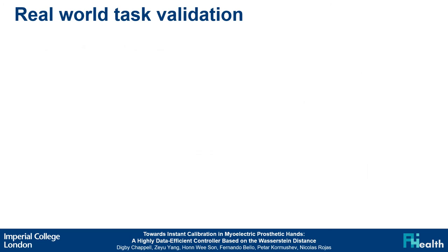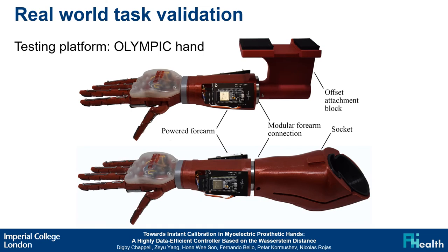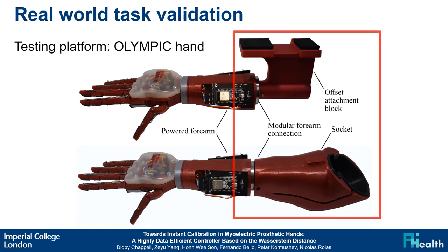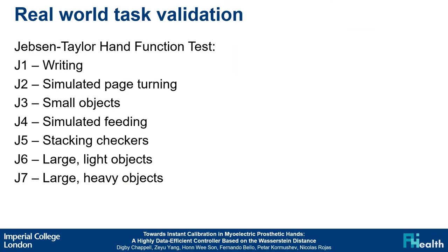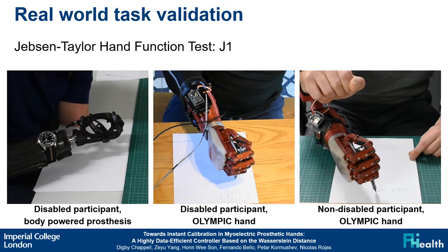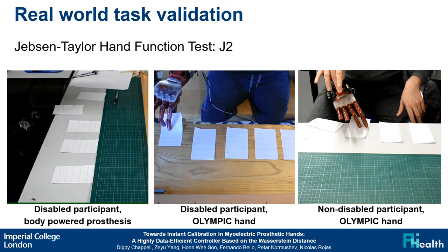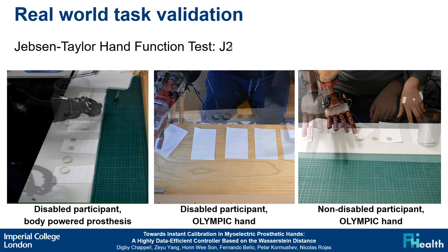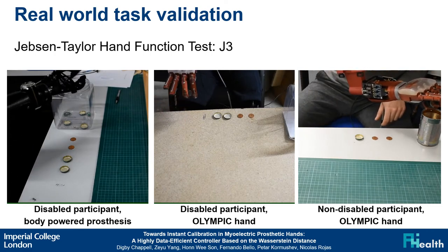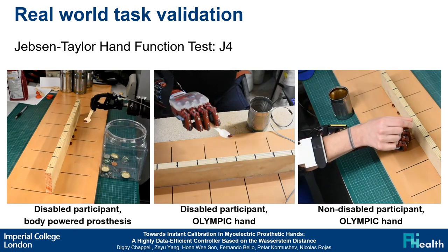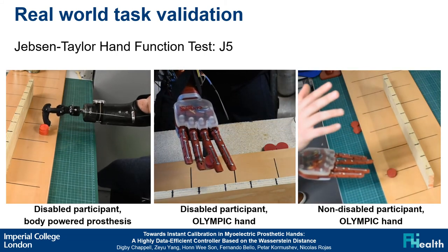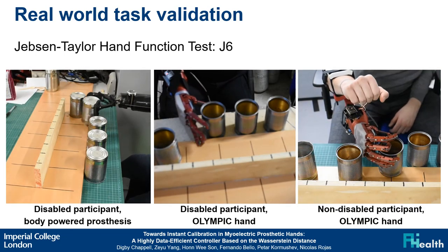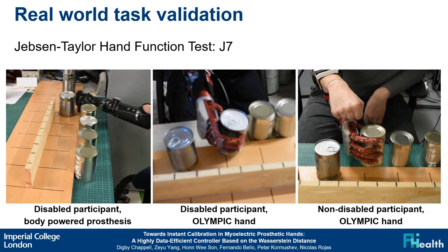The final experiment was to validate the controller on real-world tasks. We used the Olympic hand as a testing platform, with the addition of a powered forearm and a custom attachment block and socket for non-disabled and disabled participants respectively. Participants completed the Jebson-Taylor hand function test, which includes tasks designed to represent a variety of activities of daily living. Here we can see participants completing the first task, writing; the second task, simulated page turning; the third task, picking up small objects; the fourth task, simulated feeding; the fifth task, stacking checkers; the sixth task, picking up large light objects; and the seventh task, picking up large heavy objects.